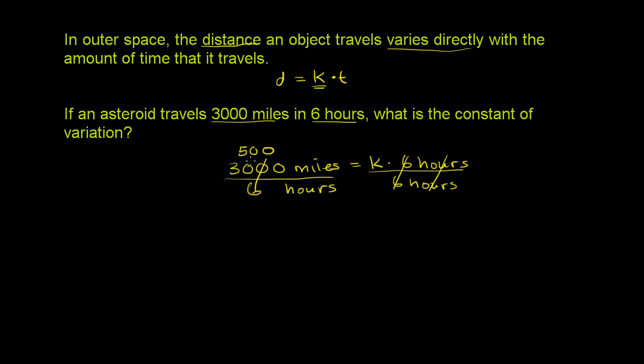So the constant of proportionality, the left-hand side is just 500, and then we have miles per hour. 500 miles per hour, and that is equal to k. So the constant of proportionality is 500 miles per hour.